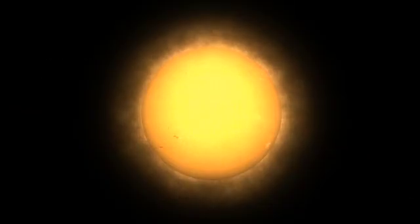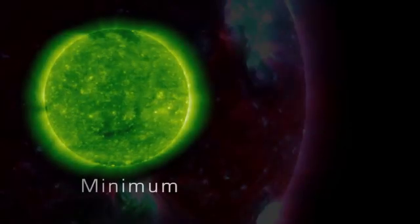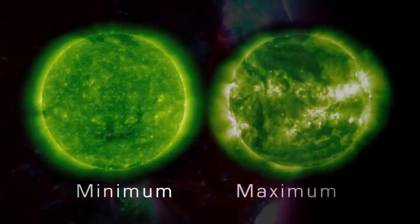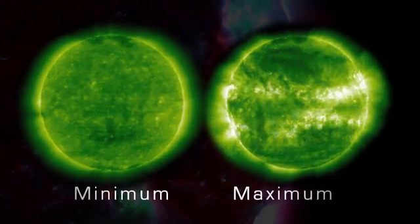During one cycle, the number of sunspots, a good indicator of solar activity, goes from low to high and back down to low. Solar minimum represents a period of time when sunspot numbers are relatively low, and solar maximum represents a period when sunspot numbers are relatively high.